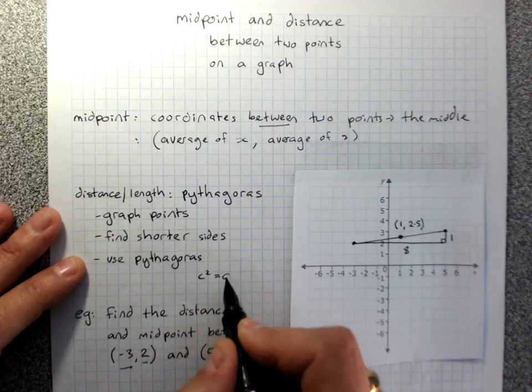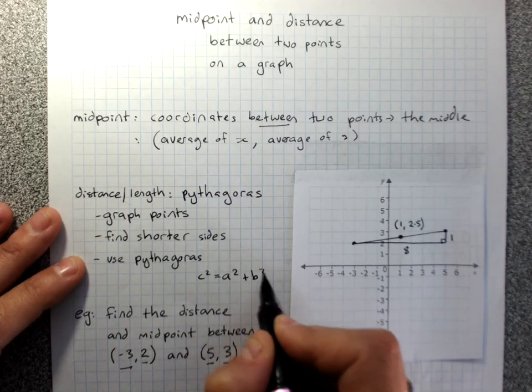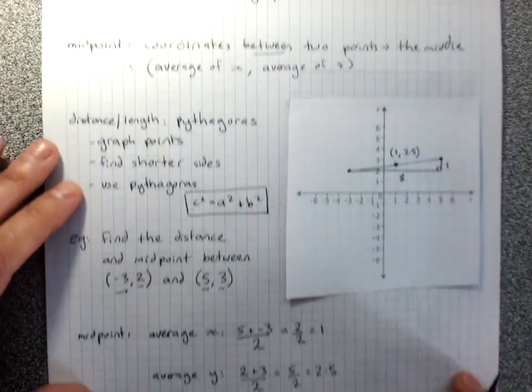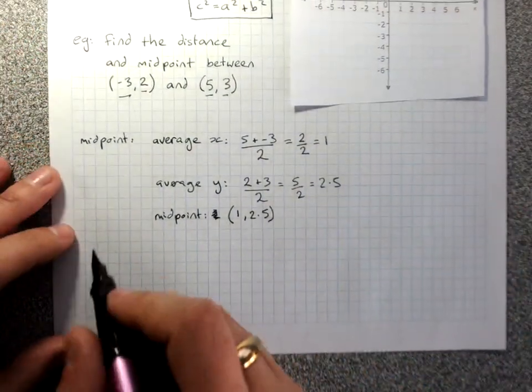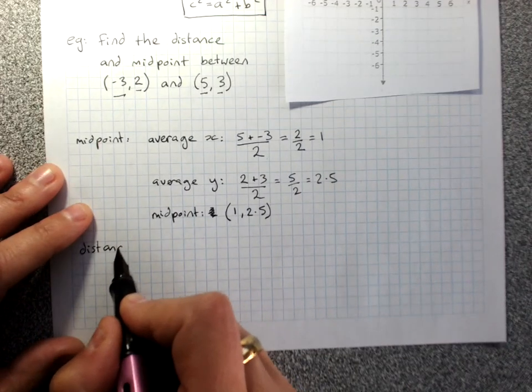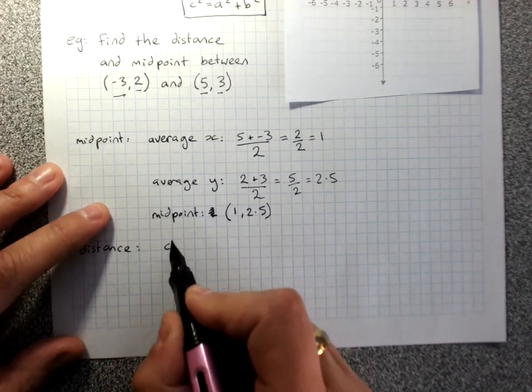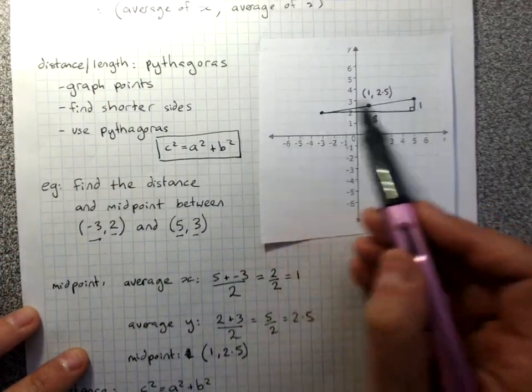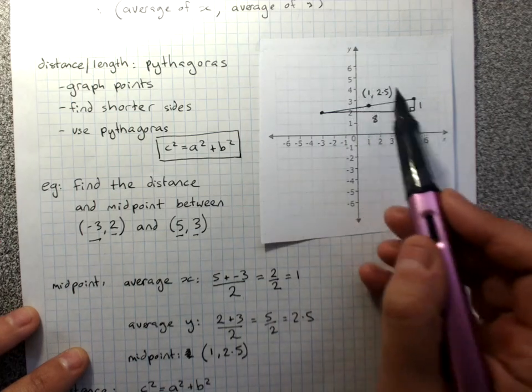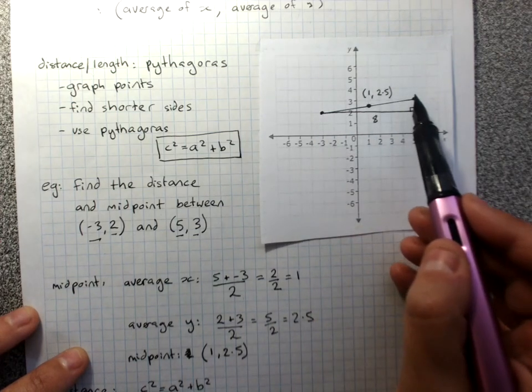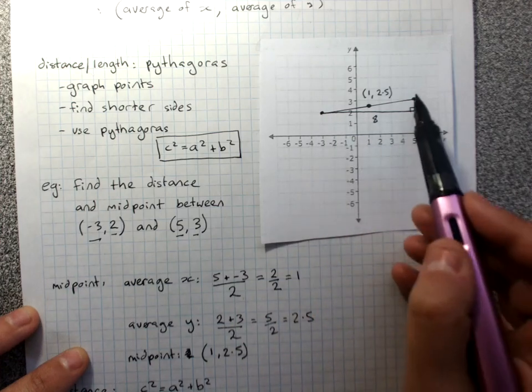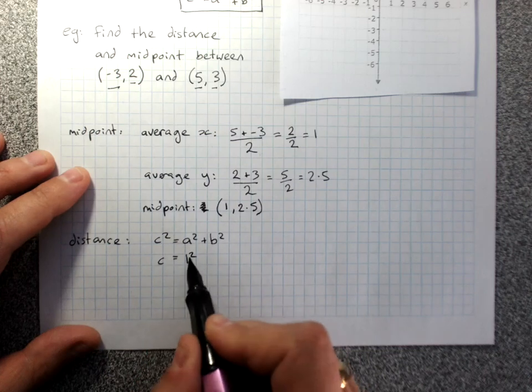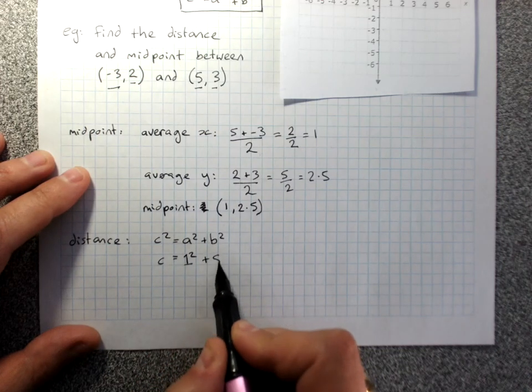So for distance, c squared equals a squared plus b squared. We're finding the hypotenuse all the way along. We're not including the midpoint, just from this point to that point. Our two short sides are 1 and 8. c squared equals 1 squared plus 8 squared.